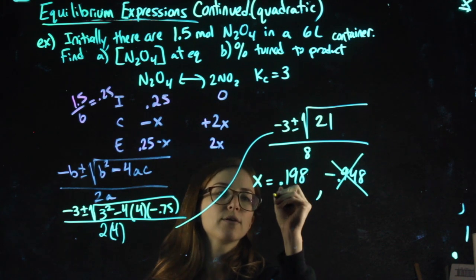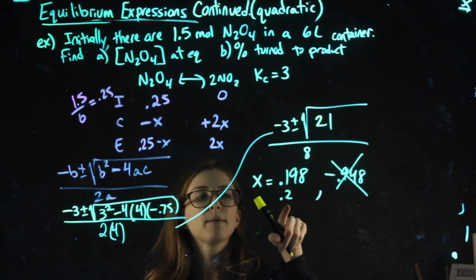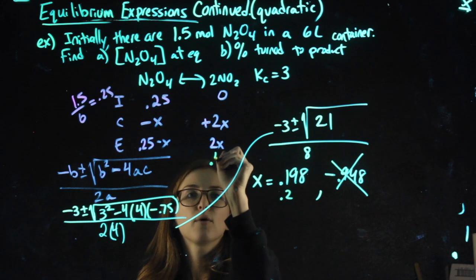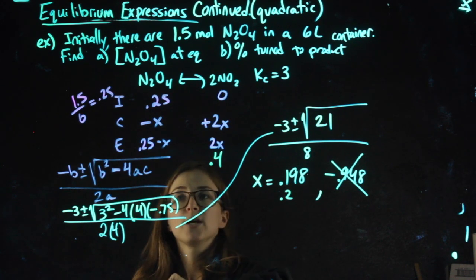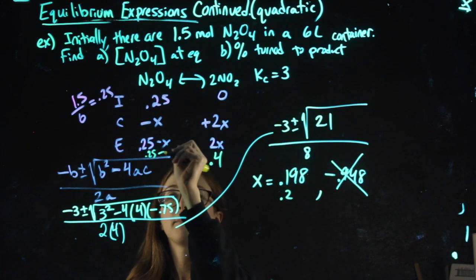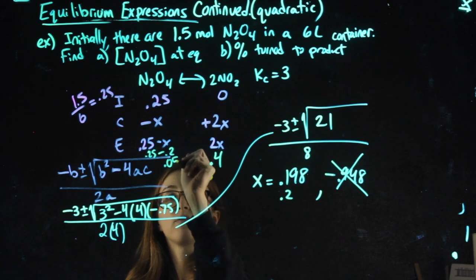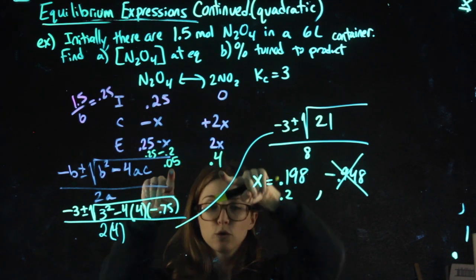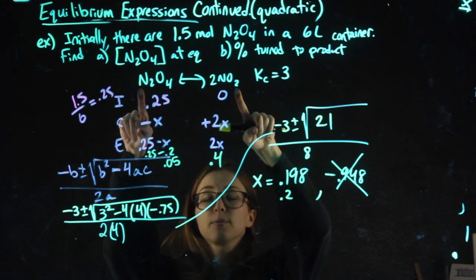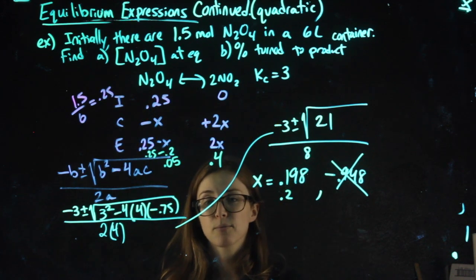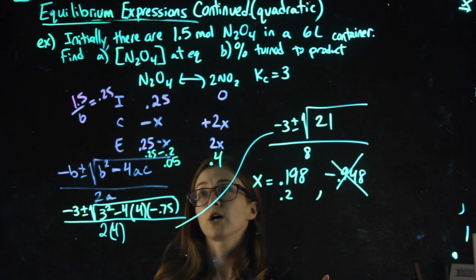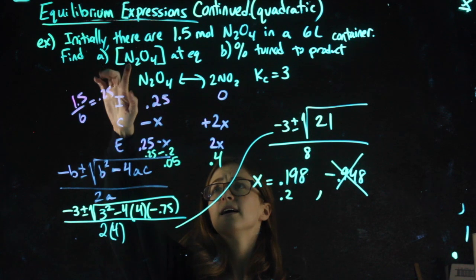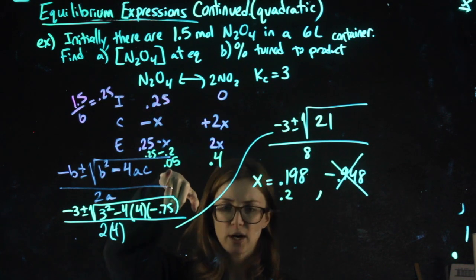However, 0.198, or if you want to just round it up to 0.2, when I plug 0.2 in here, I would get 0.4. When I plug 0.2 in there, 0.25 minus 0.2 gets me 0.05. I have two positive values for equilibrium for my reactants and my products, so we're good. The answer to A, N2O4 equilibrium, is 0.05.